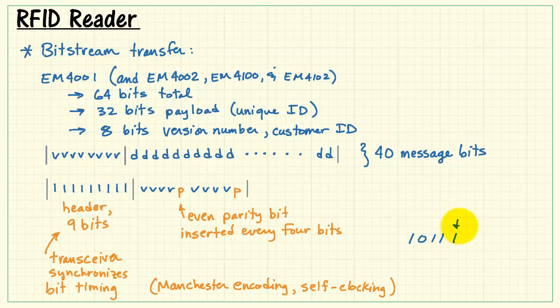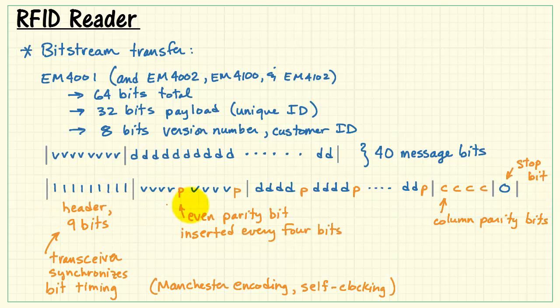Here's how even parity would work. Supposing these were my 4 bits. I would count the number of 1s that I have, and if it's odd, then I add an extra 1 to make it an even number total. In this case, we already had an even number of bits that are 1, so the parity would be 0. We insert these parity bits every 4 bits for that 40-bit message. Finally, we have 4 column parity bits. Come back to that in a second. And then a single stop bit, which is 0.